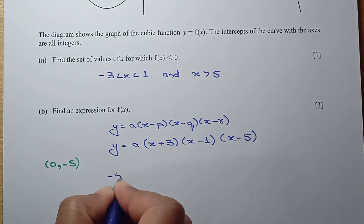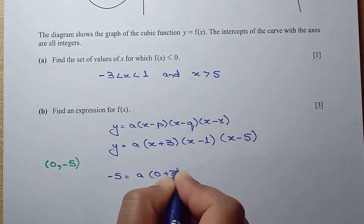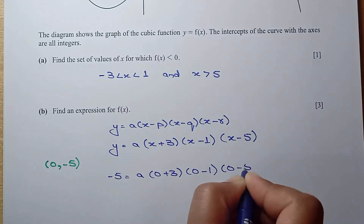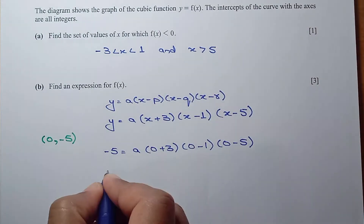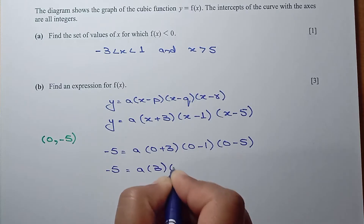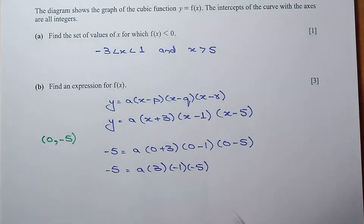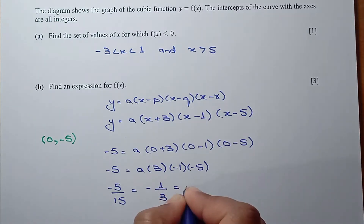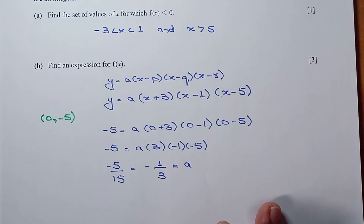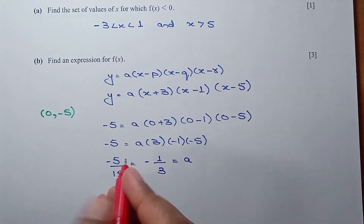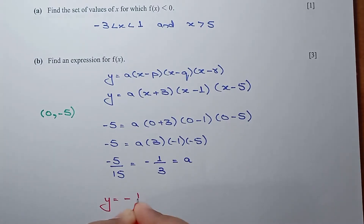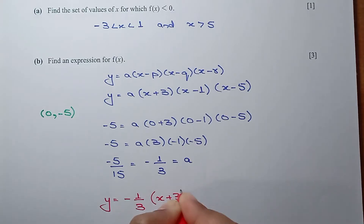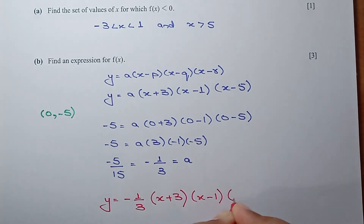When y is minus 5, we have a times (0 plus 3)(0 minus 1)(0 minus 5). So minus 5 equals a times 3 times minus 1 times minus 5. Negative times negative is positive, and 3 times 5 is 15. So minus 5 divided by 15 gives a equals minus 1 over 3. The expression for f of x is y equals minus 1 over 3 times (x plus 3)(x minus 1)(x minus 5).